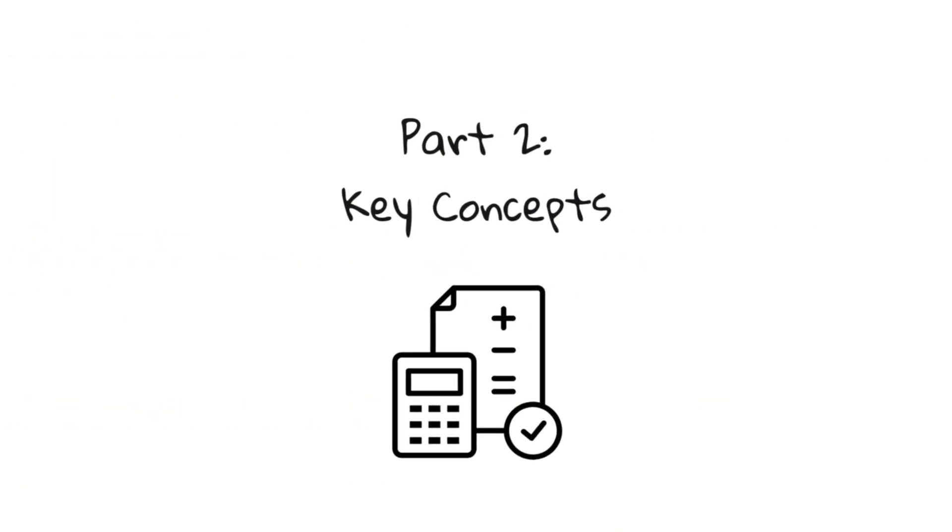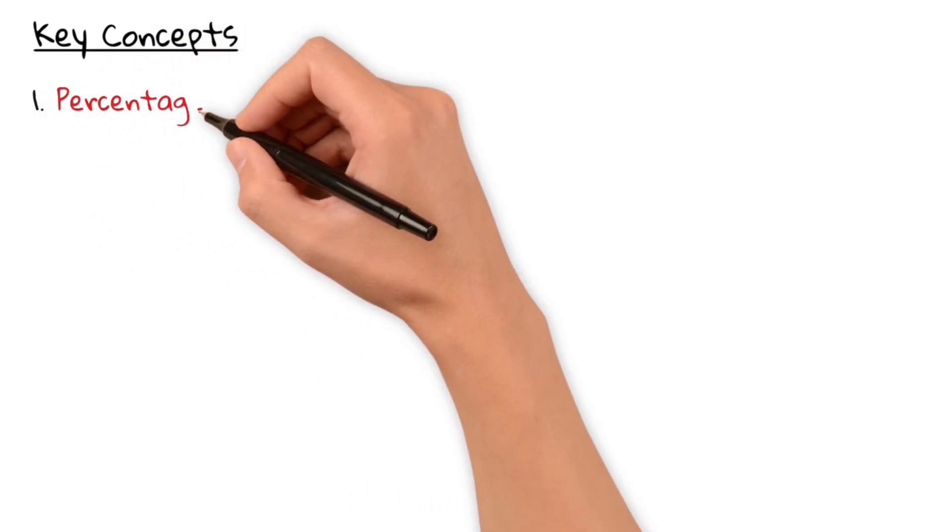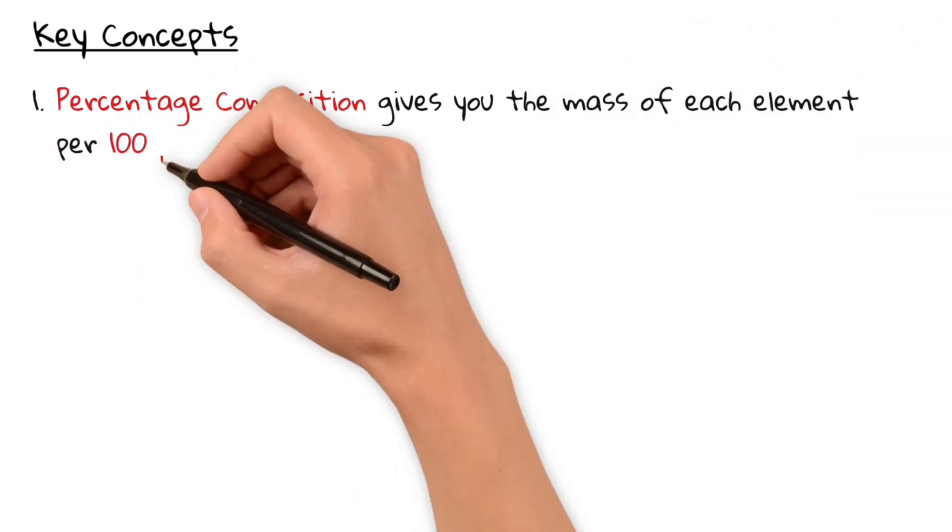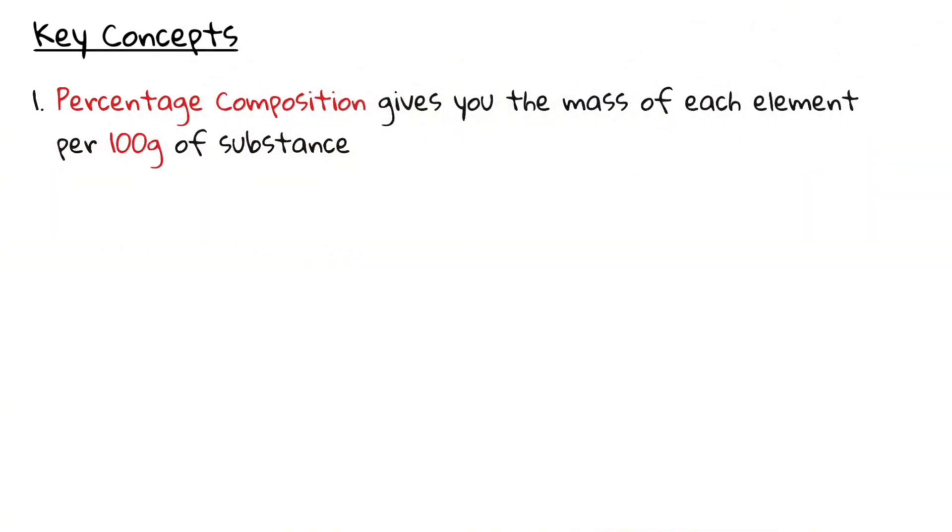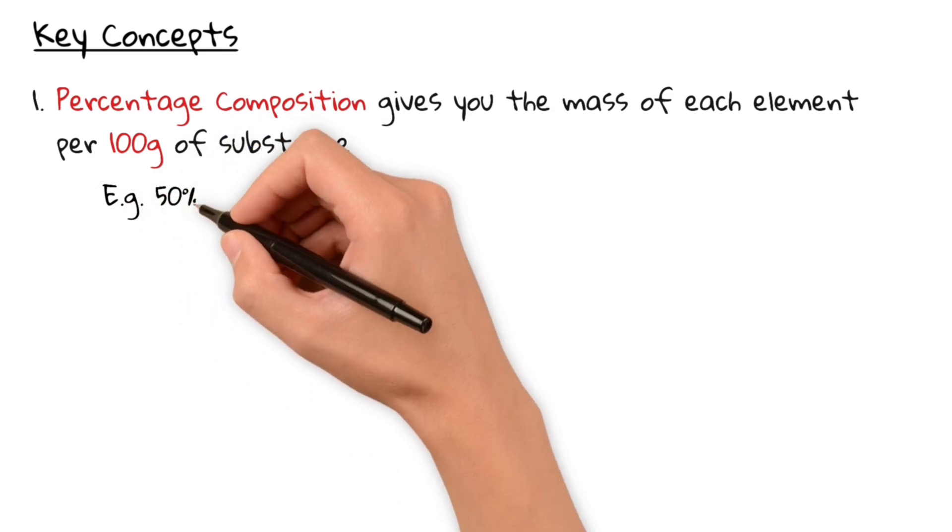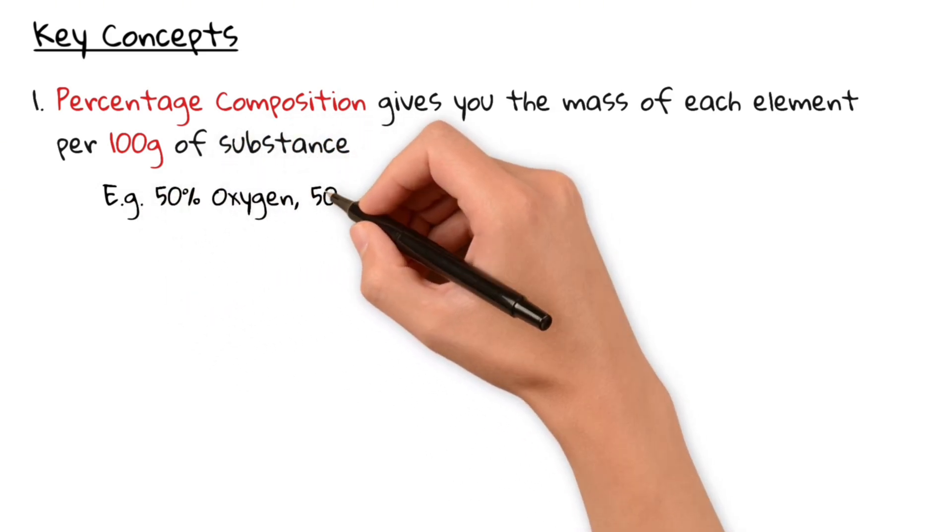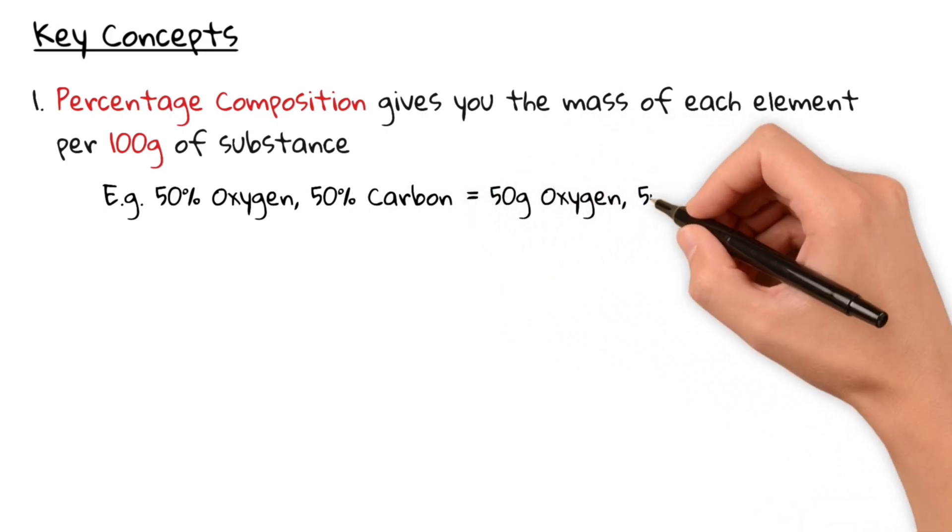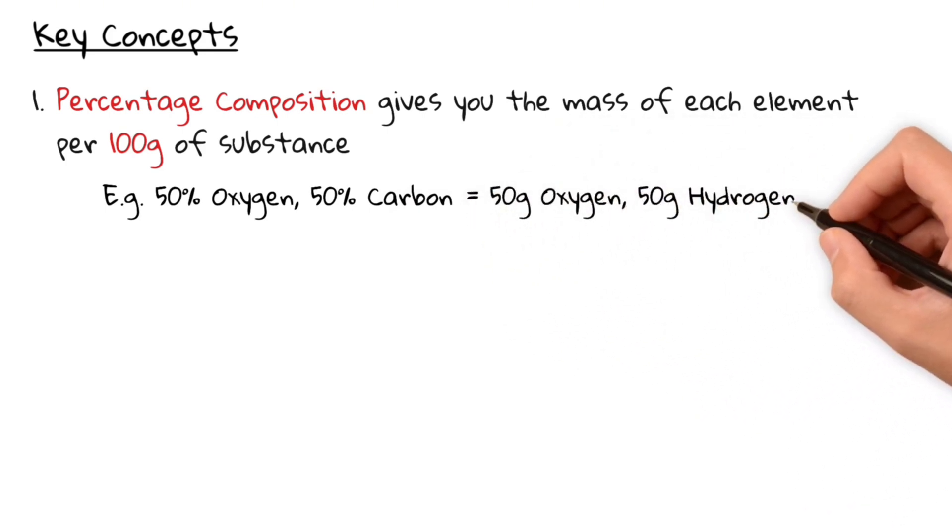Now, before we start solving problems, here are three things you must know. Firstly, percentage composition gives you the mass of each element per 100g of substance. So, for example, if a compound would be made up of 50% oxygen and 50% carbon, you would simply assume 50g of oxygen and 50g of carbon.